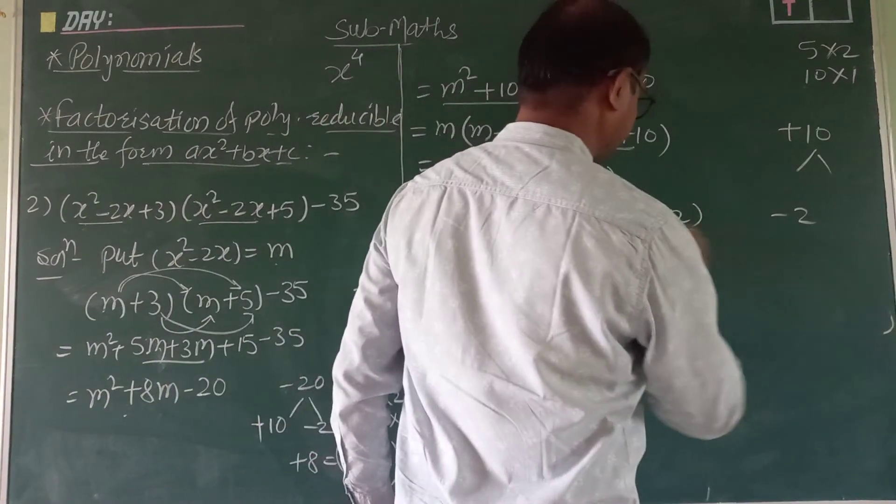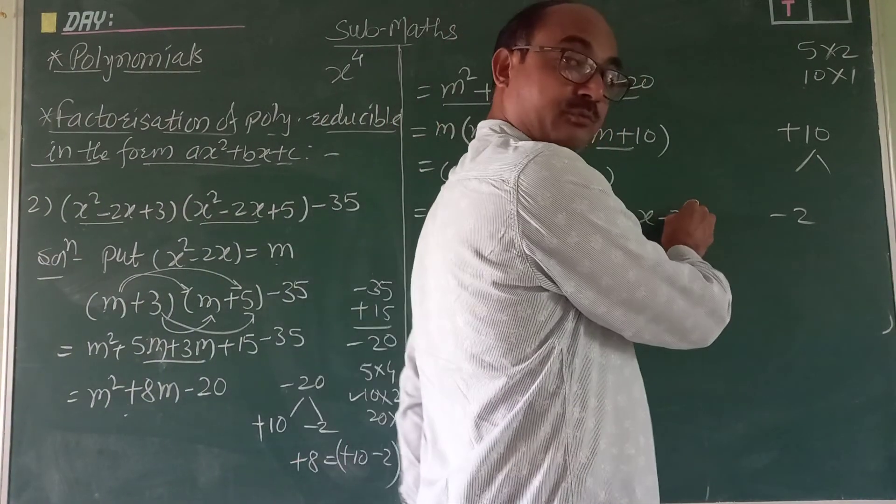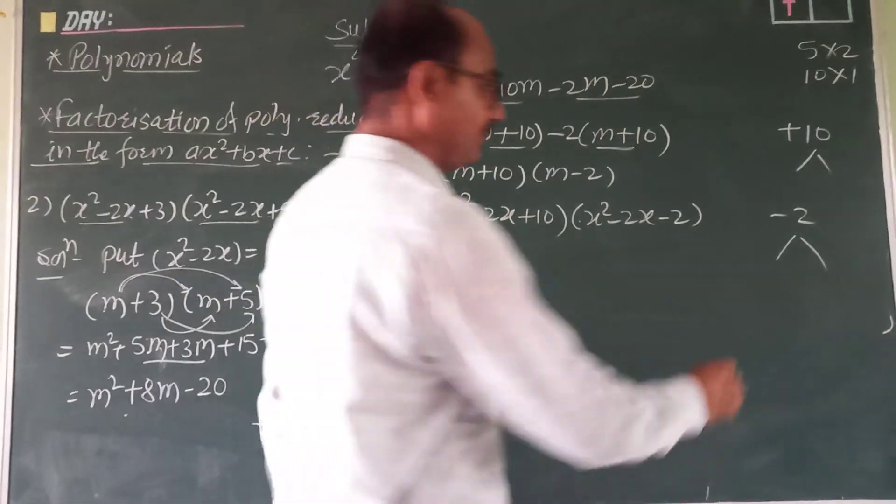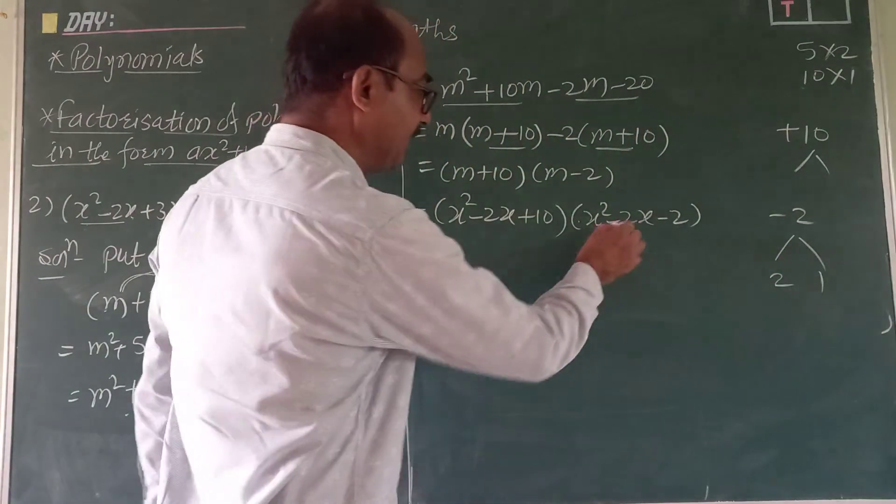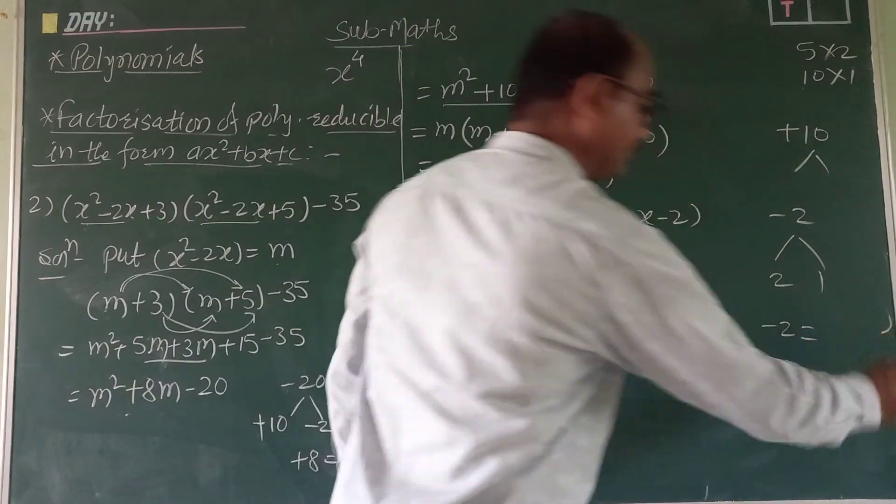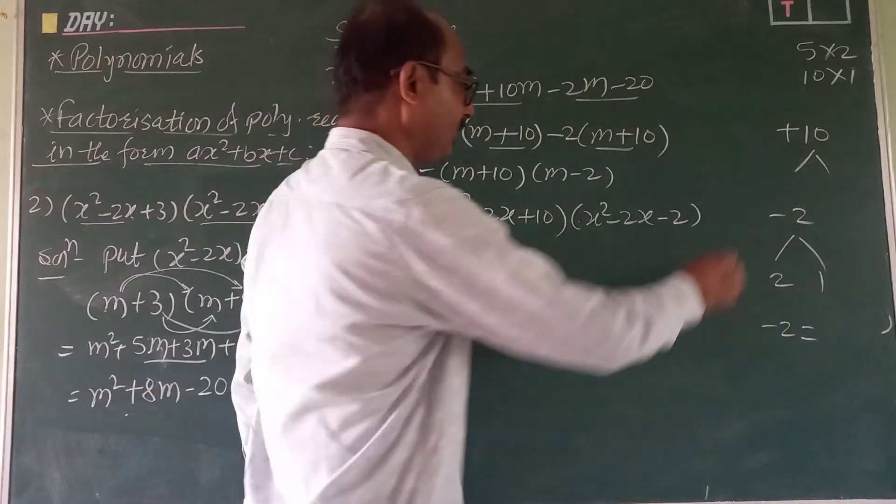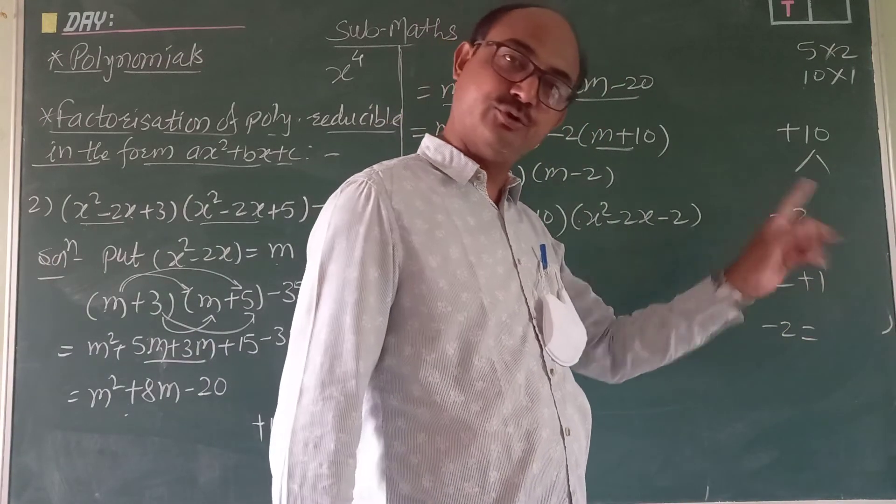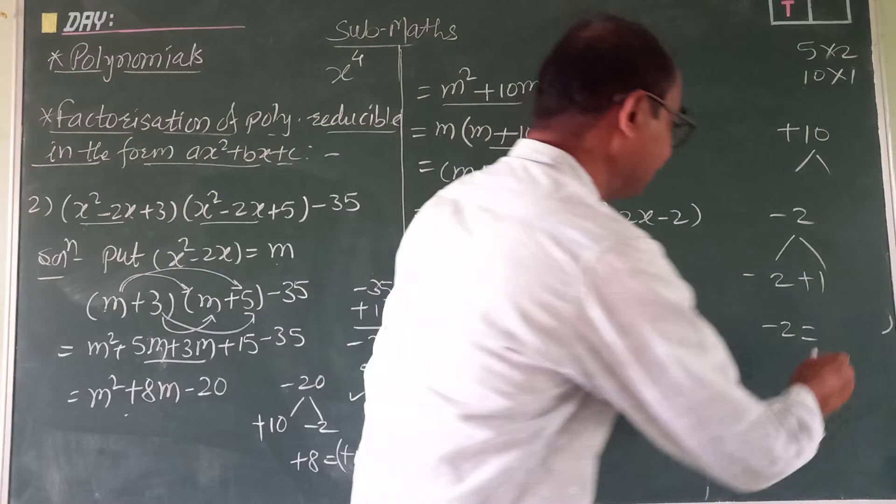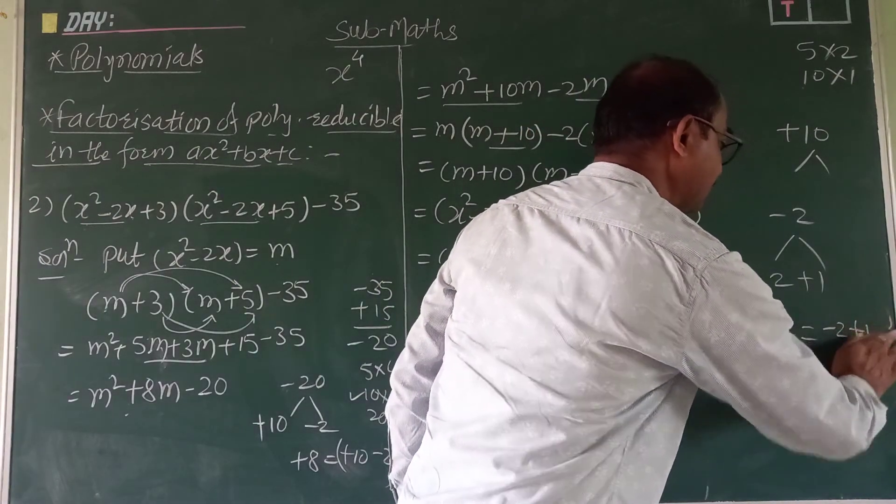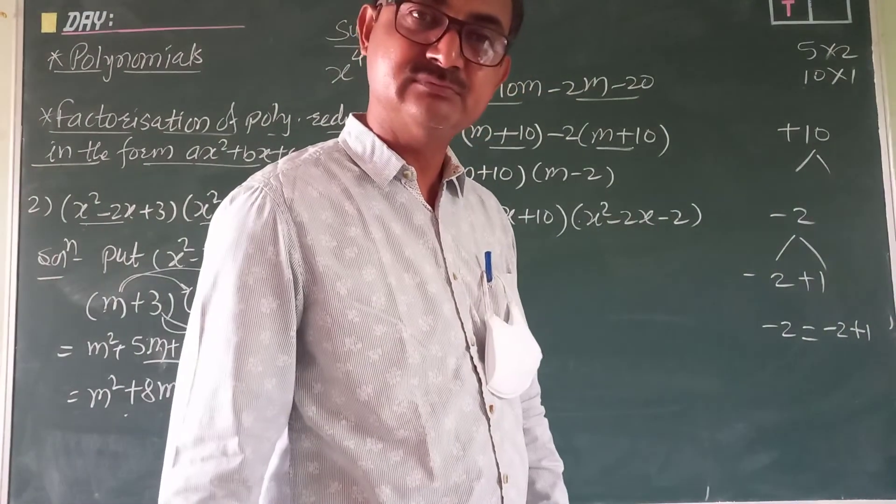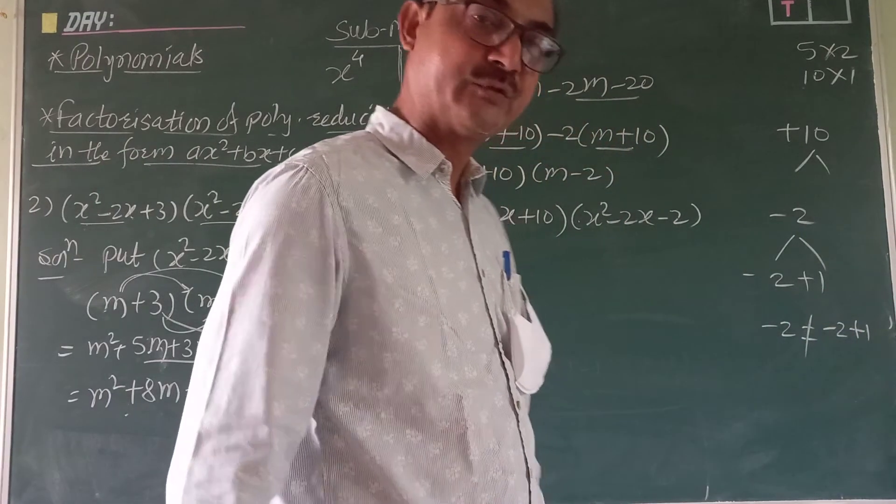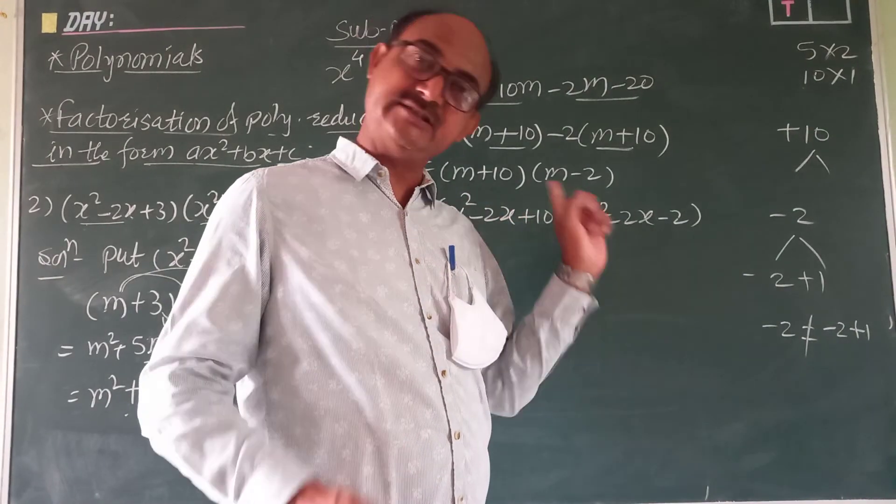Similarly here, 1, 1 into minus 2, product is minus 2. Middle term coefficient is minus 2. Here product minus, so greater minus. Product comes minus 2, no problem. But check this minus 2 and plus 1. This addition comes minus 2? No, it is minus 1. Not that. So second bracket also we can't factorize this.